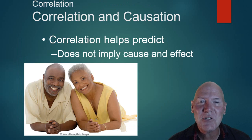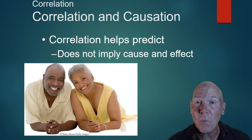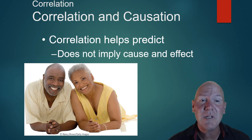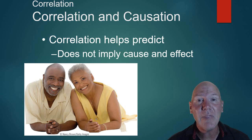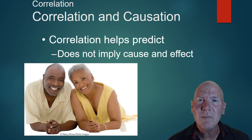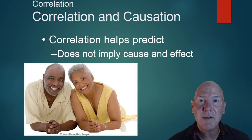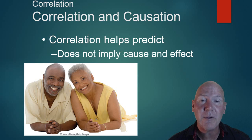What are correlations good for? They show us a relationship. For example, correlations showed that smoking and lung cancer go together, but we couldn't say smoking causes lung cancer until further research was done — because correlation helps predict but does not imply cause and effect. For instance, there's a true correlation: the more ice cream eaten, the more violent crimes committed. But that doesn't mean eating ice cream makes people want to commit crimes. There's probably a third factor involved.